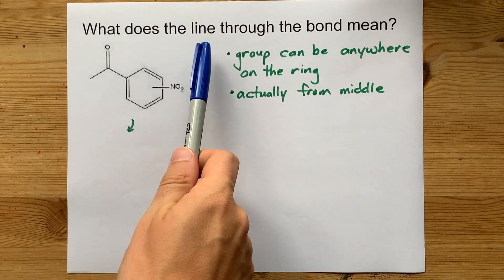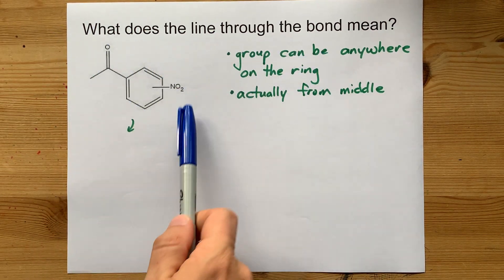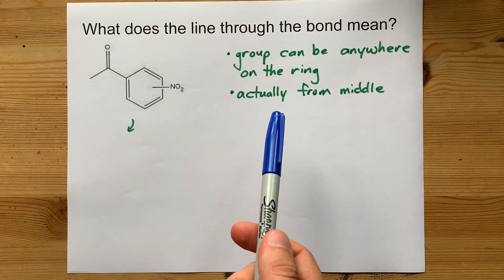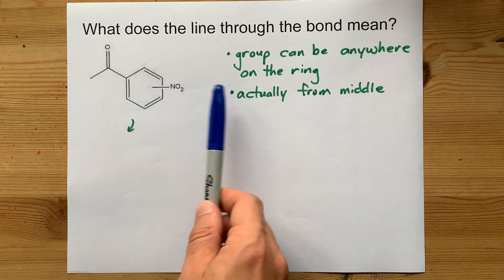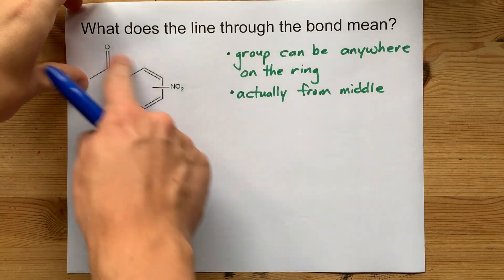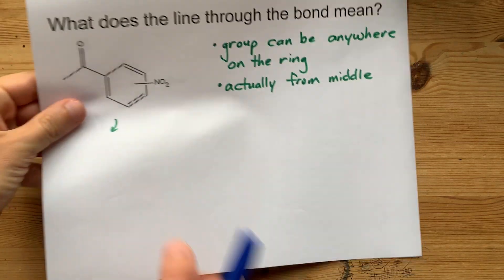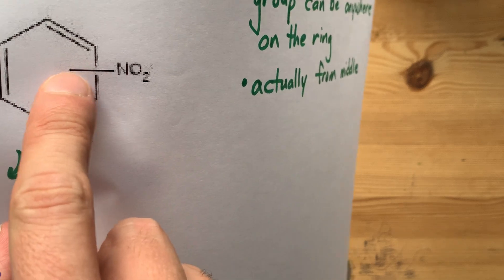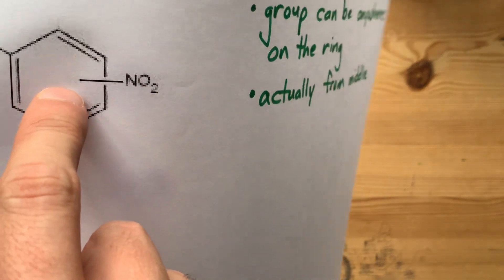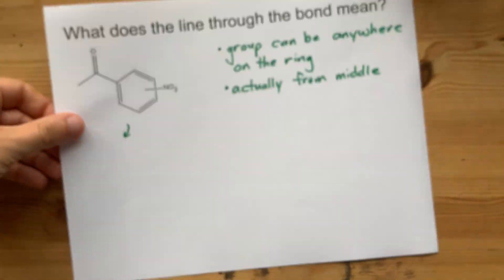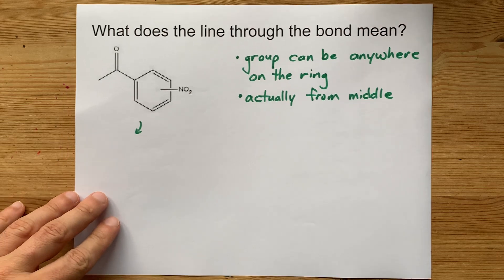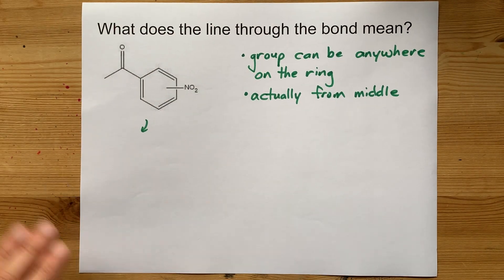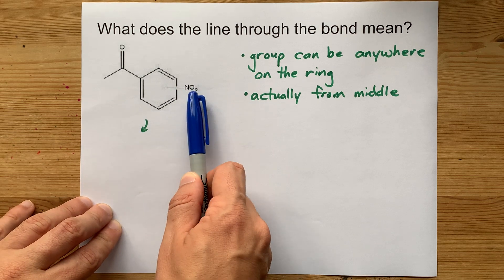Several people have asked what the line that goes through the bond in an organic chemistry diagram actually means. First of all, it's not going through the bond. Even in this diagram that I took from the internet, you can see that there's a break in there. It's not crossing through the bond. It's meant to be coming from the middle and sticking out of the center in like a third plane coming out at you. But what it means is that that group,